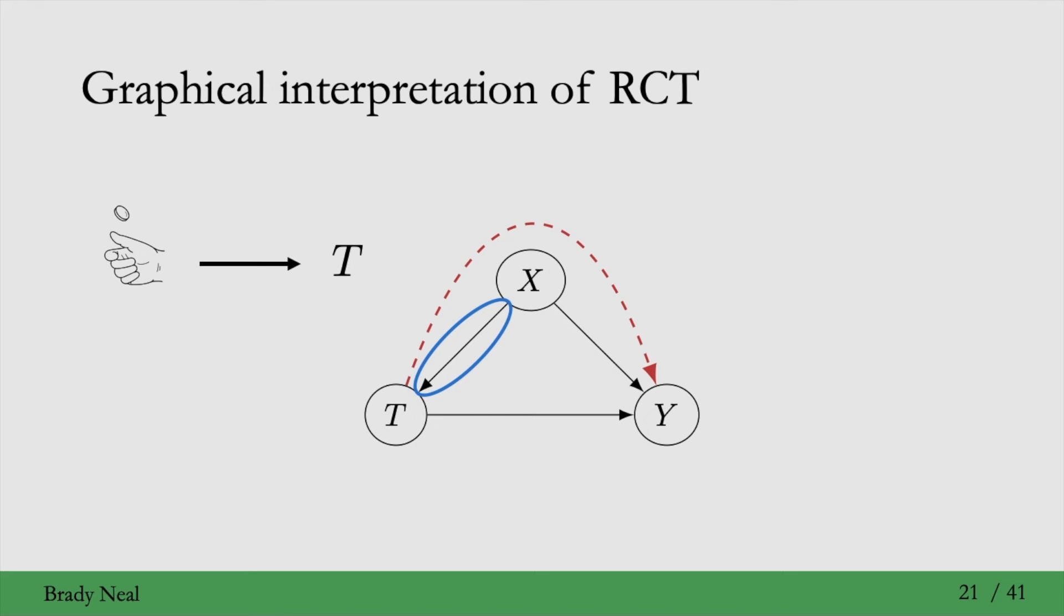a randomized control trial would mean that the way that the treatment is assigned is just a function of a coin flip. So there should be no edge from x to t. And by running a randomized control trial, by randomizing treatment, we remove this edge, which removes confounding.